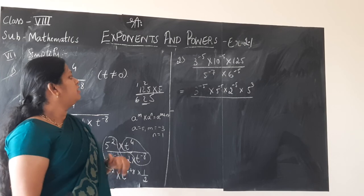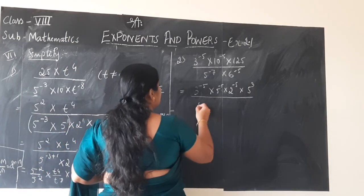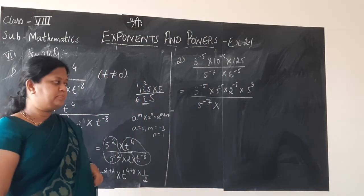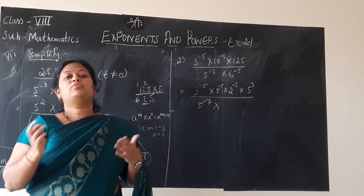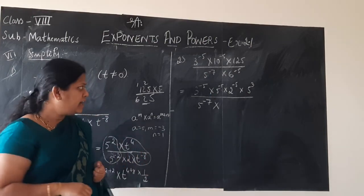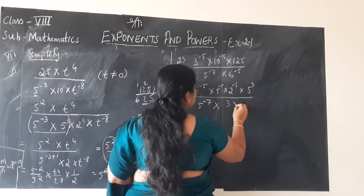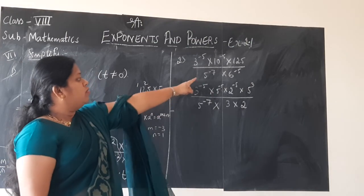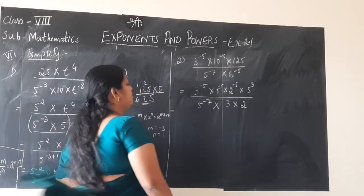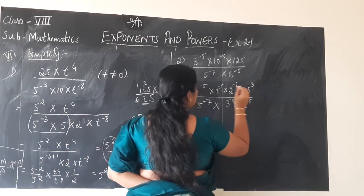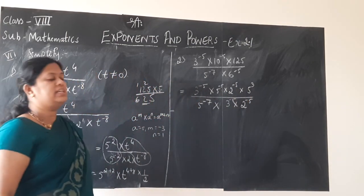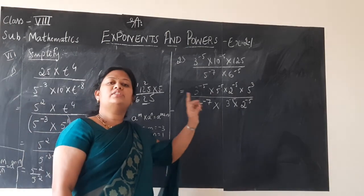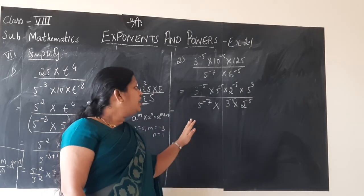Whenever you have perfect cube or perfect square numbers, you can directly write like this. If they are not perfect squares or cubes — like my number 10 — then you have to split it as a product. Make sure whatever power is there, the same power is given to as many multiples as you write. Now done with the numerator simplification, let us concentrate on the denominator.